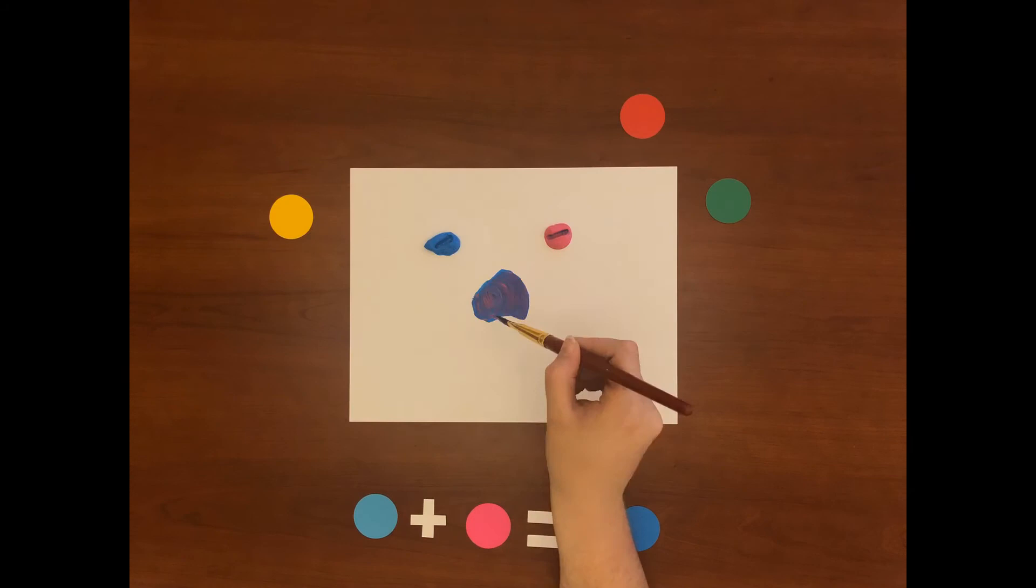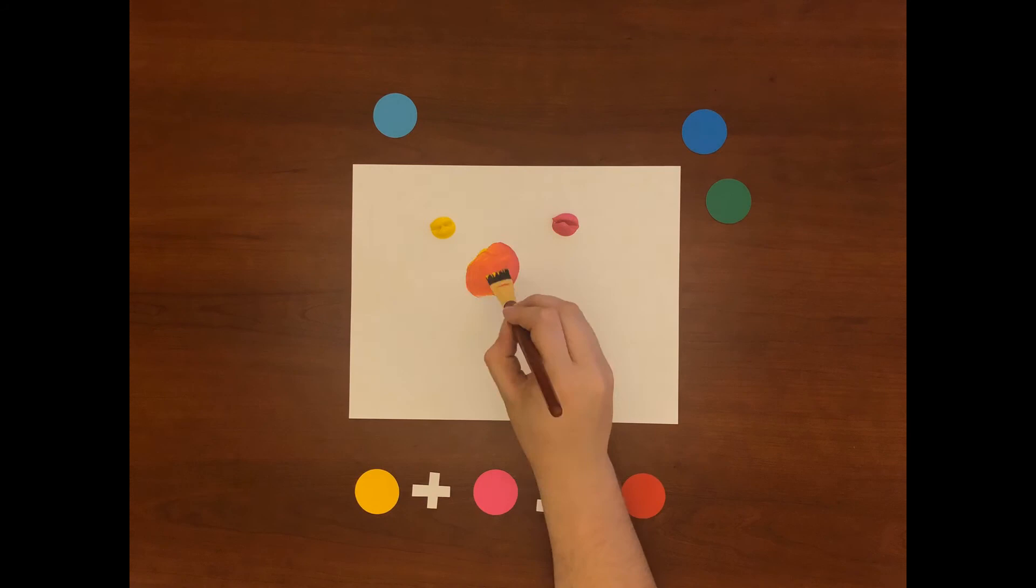Here if you take yellow and magenta you'll get red. I know this looks a little pink here on the screen but I promise it's red.